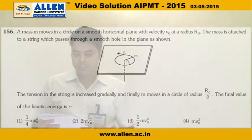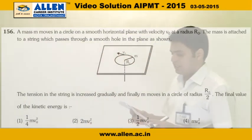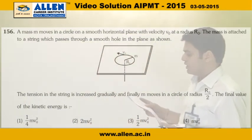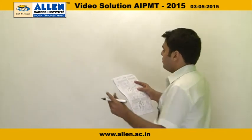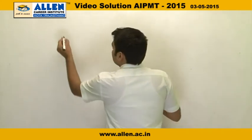In question number 156, if mass M moves in a circle of smooth horizontal plane with velocity V0 of radius R0.